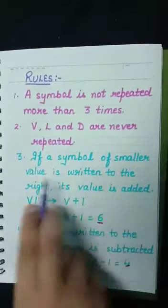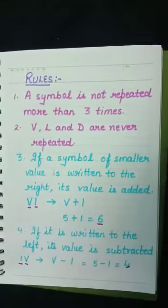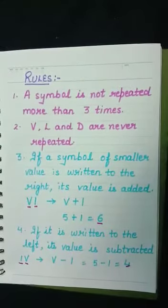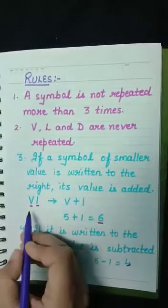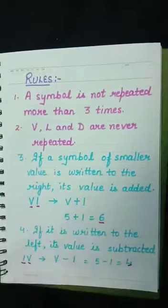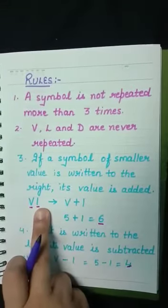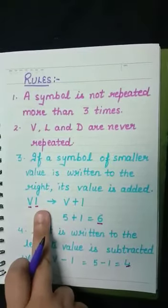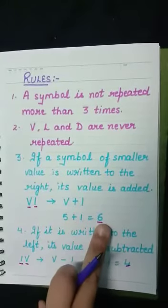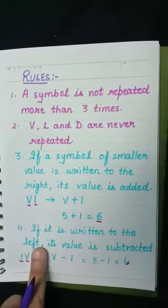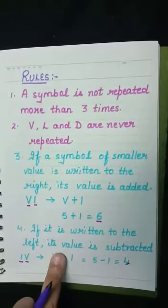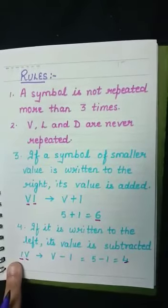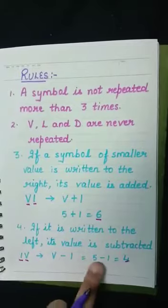Third rule: if a symbol of smaller value is written to the right, its value is added। जैसे VI में I smaller है और right hand side में लिखा है, इसलिए value add होगी — 5 plus 1 = 6। लेकिन अगर smaller number को left में लिखें, तो उसकी value subtract की जाती है। जैसे IV में I left hand side में है — 5 minus 1 = 4।